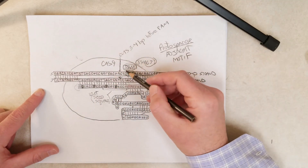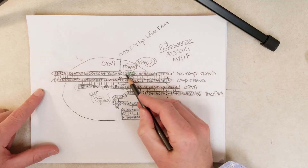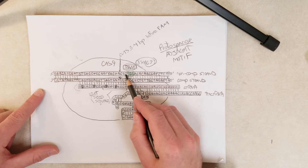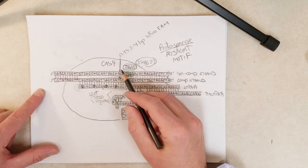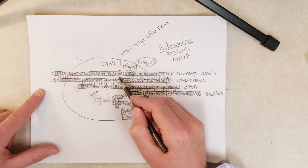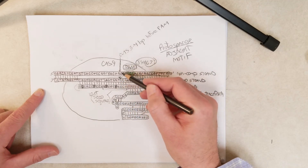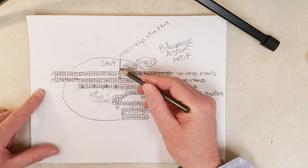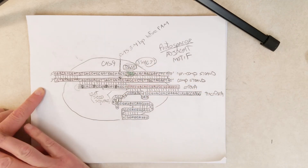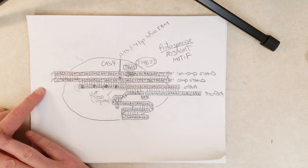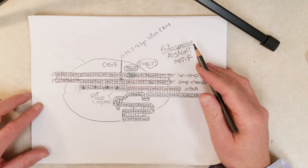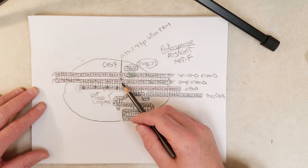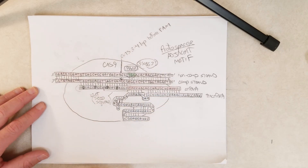The PAM site is located 5-prime of where the seed sequence starts. Cas9 cuts between positions three and four from the PAM site — cleaving the phosphodiester linkages on both strands of the DNA molecule. This double-strand break means the viral DNA molecule is cleaved and hopefully cannot contribute to infection of the bacterial cell.